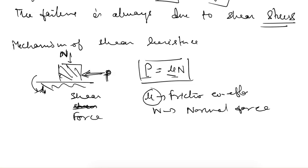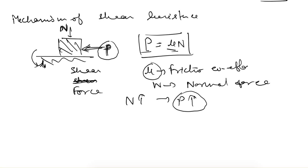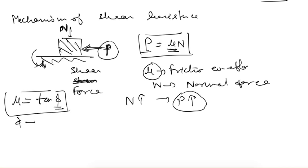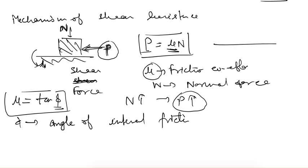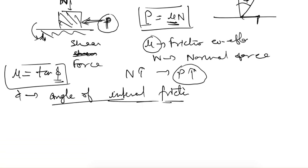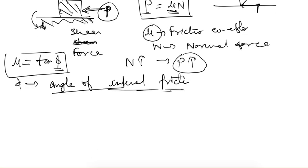If the friction coefficient is more, more shear force is required to move the block; if the normal force is more, more shear force is also required. In soil, this μ is equal to tan φ, where φ is the angle of internal friction — the angle between the resultant force and the normal force. Unlike a single block, soil consists of many particles with contact forces between them.